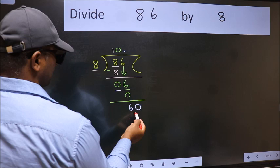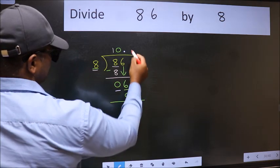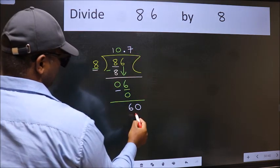So 60. A number close to 60 in 8 table is, 8 7s, 56.